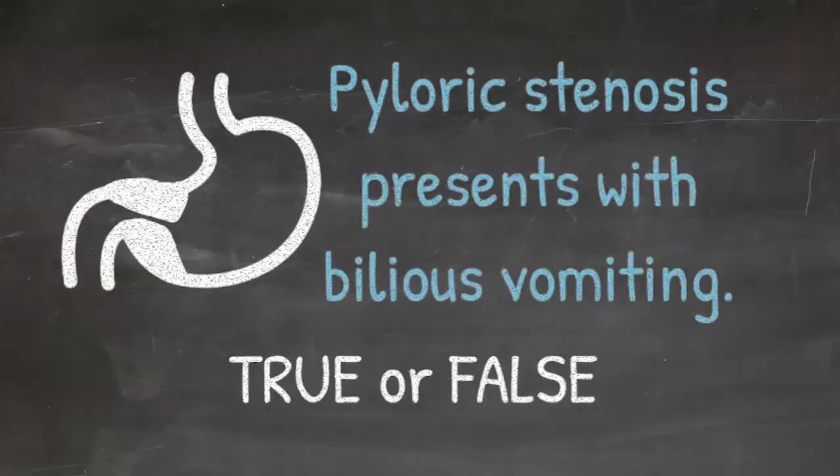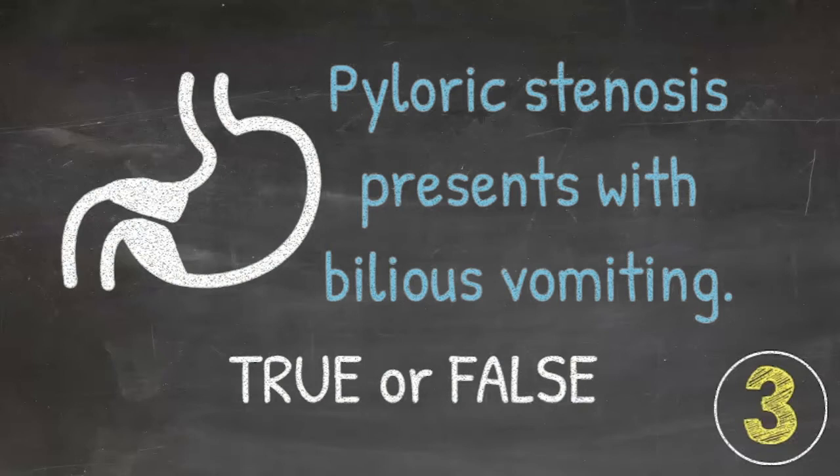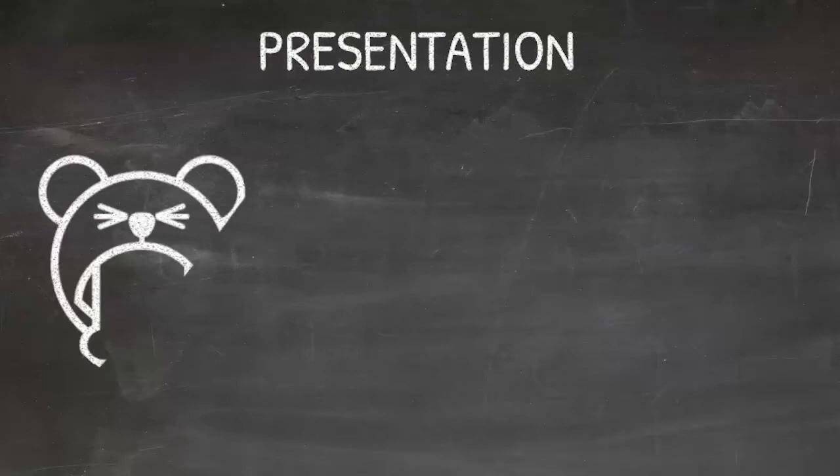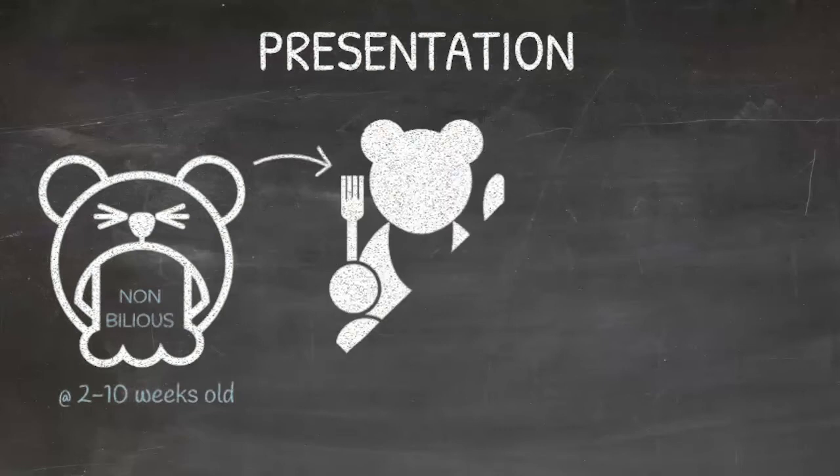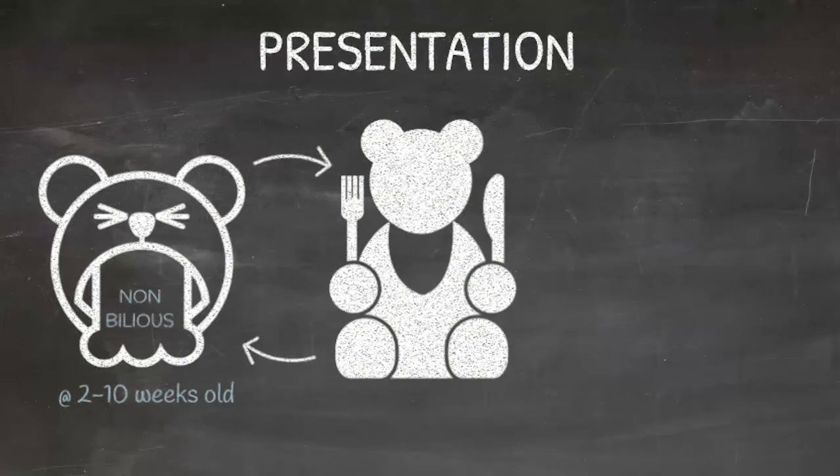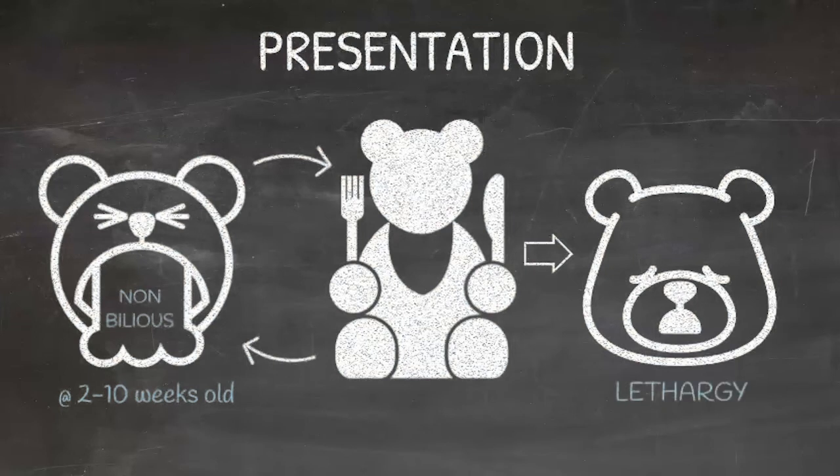How do these infants present? Patients with pyloric stenosis typically present with non-bilious vomiting, usually seen between 2 to 10 weeks of life. Infants are otherwise well-appearing and hungry after vomiting. Emesis will progress until it is projectile. Excessive vomiting can lead to dehydration and eventually lethargy. Hyperbilirubinemia can also occur in up to 14% of patients due to downregulation of hepatic enzymes associated with starvation.